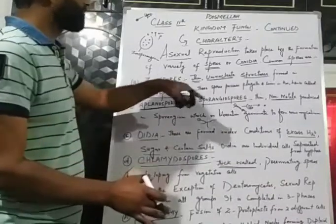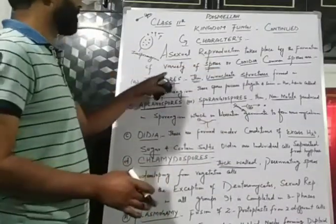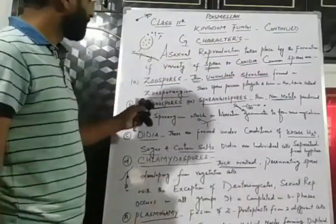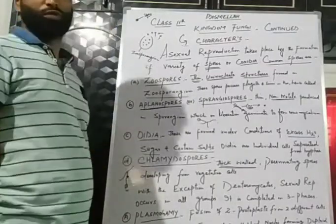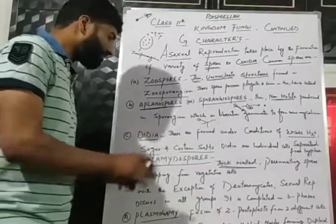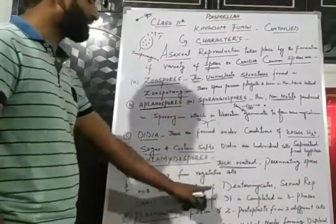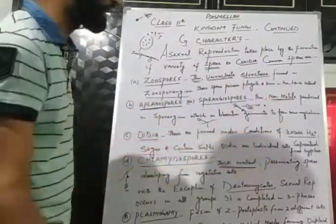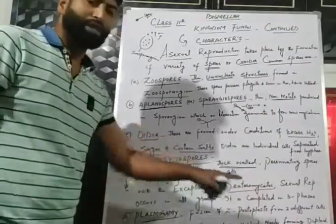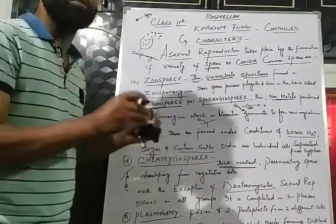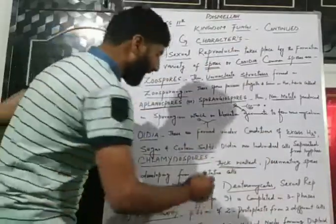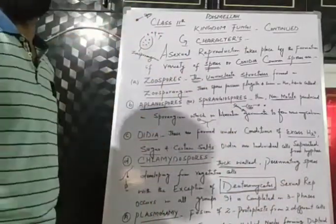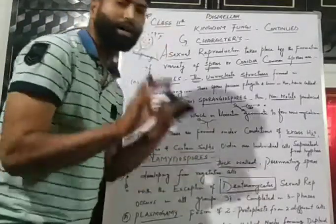These spores are called conidia. Spores can be classified into zoospores, aplanospores, oidia, and chlamydospores. Sexual reproduction in fungi — with the exception of Deuteromycetes — occurs across groups including Deuteromycetes, Ascomycetes, and Basidiomycetes.